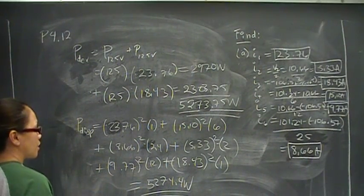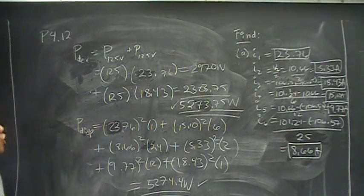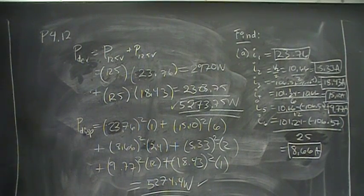And they're essentially the same. There's round off error, but within margin of error, power dissipated equals power generated, and that is the answer to problem 412.